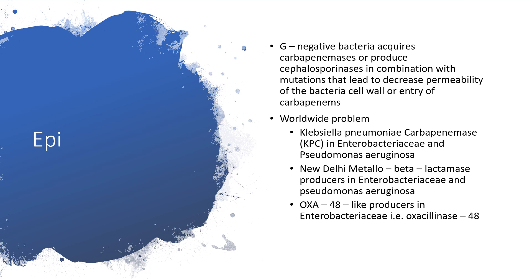The epidemiology is such that it is a worldwide problem. Gram-negative bacteria here acquire carbapenemase or produce cephalosporinases in combination with mutations that lead to decreased permeability of the bacterial cell wall or prevent the entry of carbapenems. So the bacteria is not being fully attacked, either bacteriostatically or bactericidally. The effect is no longer seen on the bacteria because there is no permeability of the bacterial wall and no entry of the carbapenems.